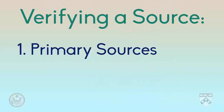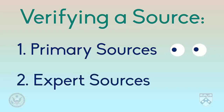How can journalists verify a source to know that the information they get is accurate and true? It's not always easy, but they can consider these things. Is the source primary, meaning is it original? If we consider the car accident we looked at earlier, an eyewitness is a primary source, while someone who just heard about the accident is not. Does the source have expert knowledge? For a car accident, an expert on road safety or an automotive engineer would be a good source of information.